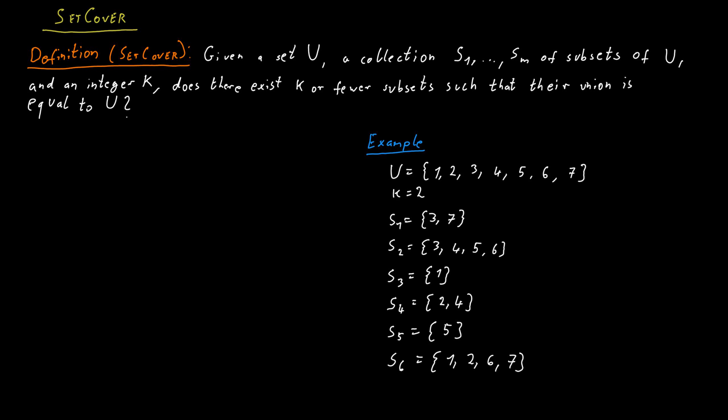Now the question is whether we can select two of those six sets so that the union is equal to U. And the answer here is yes, we can select the second and the sixth set, and that gives us all the numbers because 1 and 2 is contained in set S6, 3, 4, 5, and 6 are contained in set S2, and 7 is contained in set S6 again.